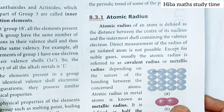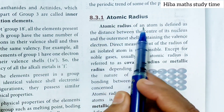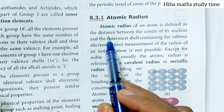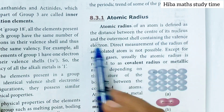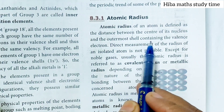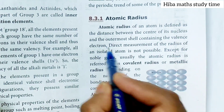Atomic radius of an atom is defined as the distance between the center of its nucleus and the outermost shell containing the valence electron.